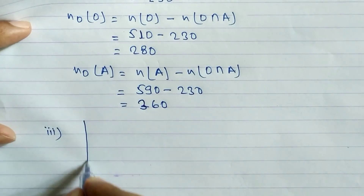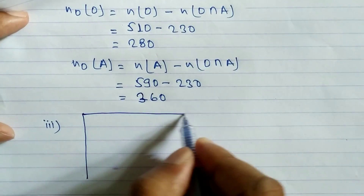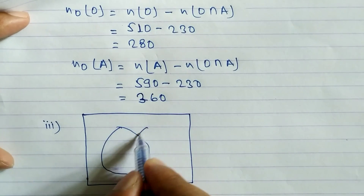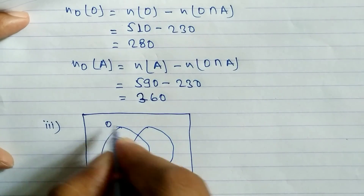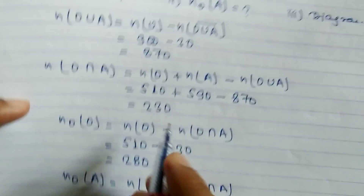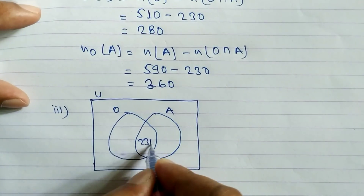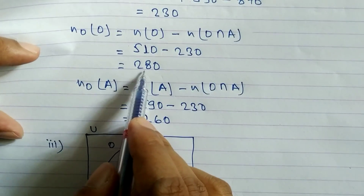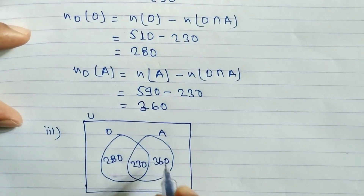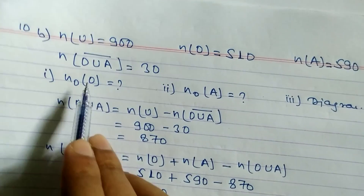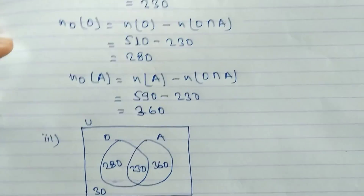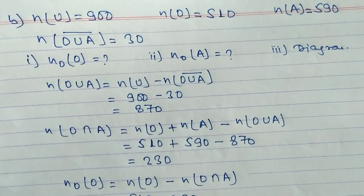Now let's draw the Venn diagram. We have two sets — orange and apple — with the universal set U. At the intersection we write 230. Orange only is 280, so we write 280. Apple only is 360, so we write 360. Outside both circles, 30 people don't like either drink. Hope you understand this problem related with sets.